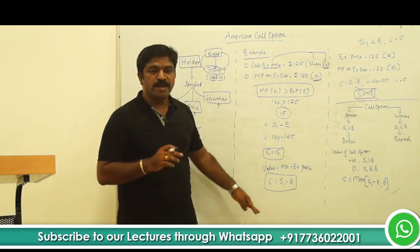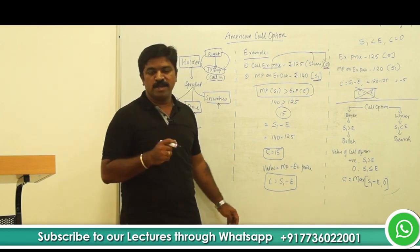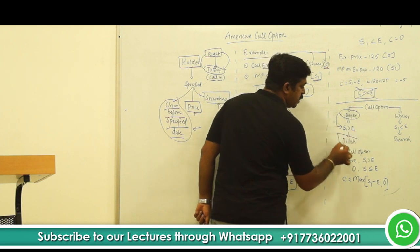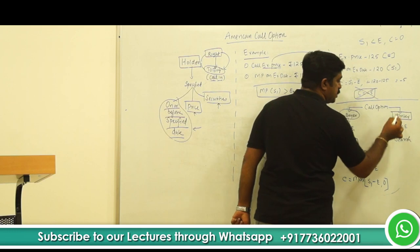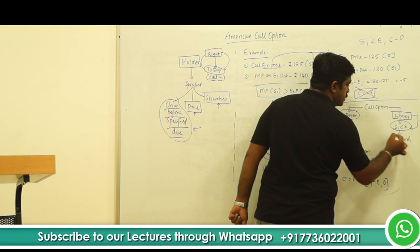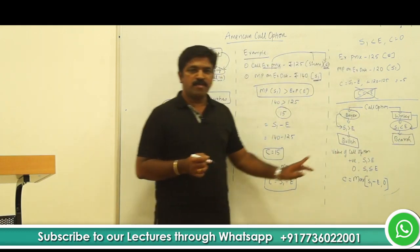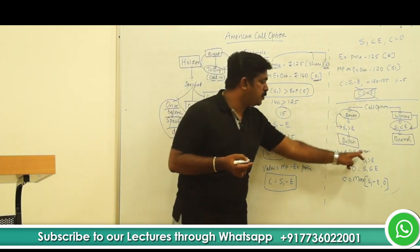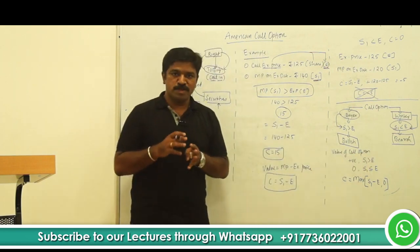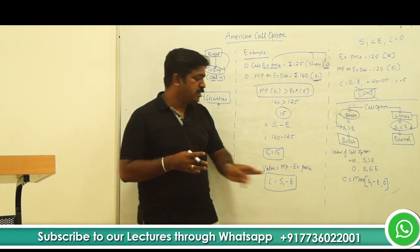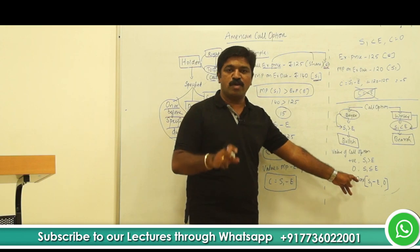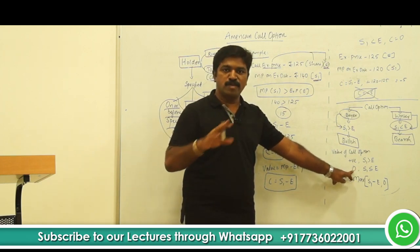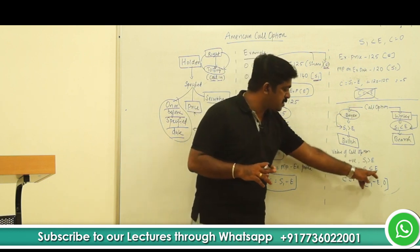If you want to get benefited out of the option, the market price should be greater than exercise price. The buyer of the option will always expect the market price S1 to be greater than the exercise price, meaning they are always bullish. Whereas the seller of the option, that is the writer of the option, they always expect the market price to be less than exercise price, meaning they are bearish. Value of the option will be positive when S1 is greater than E, but it will not turn out to be negative when S1 is below E. Rather it will be 0 because the holder of the option will not exercise this right. There will be no gain, there will be no loss, so it is going to be 0 when S1 is less than or equal to E.